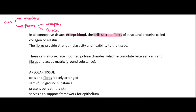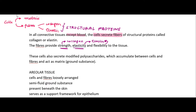The function of collagen and elastin fibers is to provide strength, elasticity, and flexibility to the tissue. Strength is provided by collagen fiber, while elasticity and flexibility are provided by elastin. Cells also secrete matrix, which is nothing but modified polysaccharides — intracellular substances that accumulate between the cells and fibers. The other name for matrix is 'ground substance' because it is present between the cells and fibers.